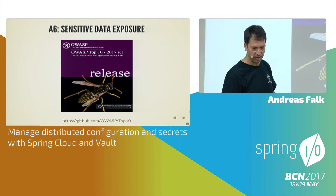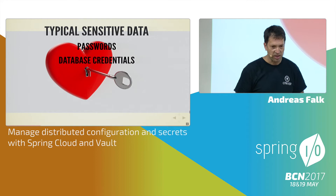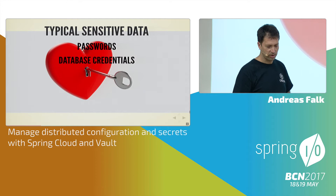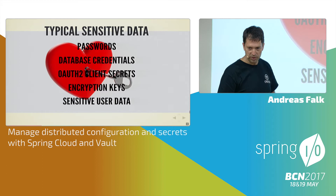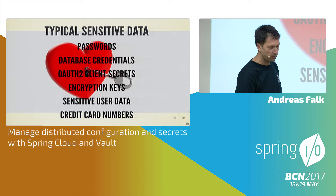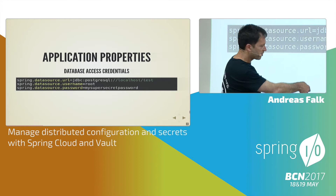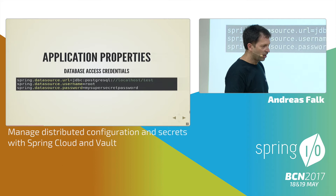Typical sensitive data includes passwords, database credentials to access Postgres or MongoDB, OAuth2 client secrets that have to be stored somewhere, encryption keys of all kinds, sensitive user data like social security numbers, and credit card numbers. So lots of sensitive data — not only in property files but also in database storage. A typical example is a super secret password stored in a property file, often the root password of a MySQL database.